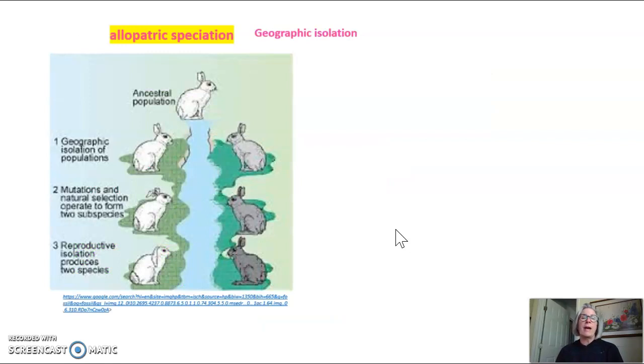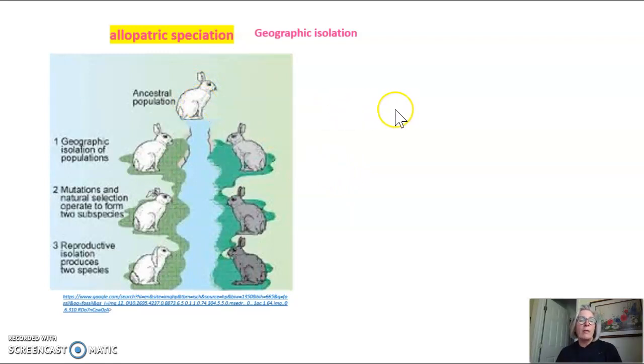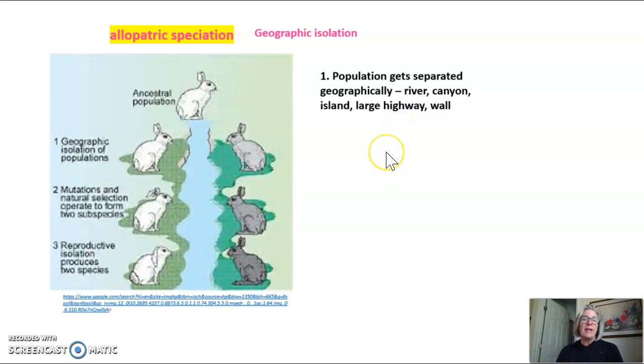The first is allopatric speciation, or geographic isolation. We're going to start with an ancestral population of rabbits, this white rabbit we see at the top of the picture. In this case, if two parts of the population get separated geographically, in this picture it's by a river, but it could be a canyon. It could be parts of a population get left on an island and then it gets flooded, so the other parts are on a different place separated by water.